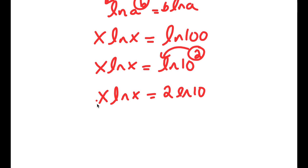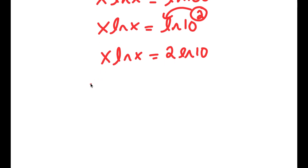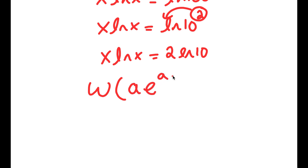Now, there's something called the Lambert W function. If I take the Lambert W function of something in the form a times e to the power of a, this is going to equal a. So this is basically what the Lambert W function is — if there's something in the form a times e to the power of a, that's going to equal a.